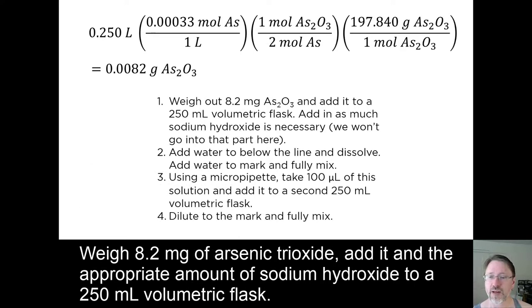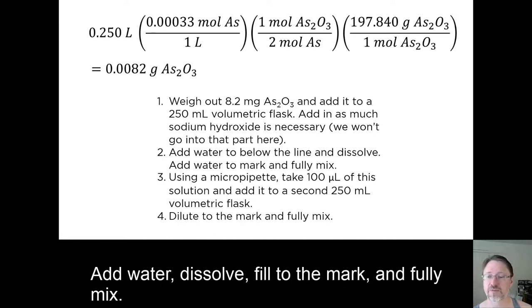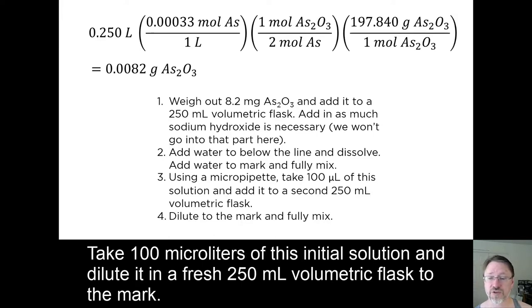Weigh 8.2 milligrams of arsenic trioxide. Add it and the appropriate amount of sodium hydroxide to a 250 milliliter volumetric flask. Add water, dissolve, fill to the mark, and fully mix. Take 100 microliters of this initial solution and dilute it in a fresh 250 milliliter volumetric flask to the mark.